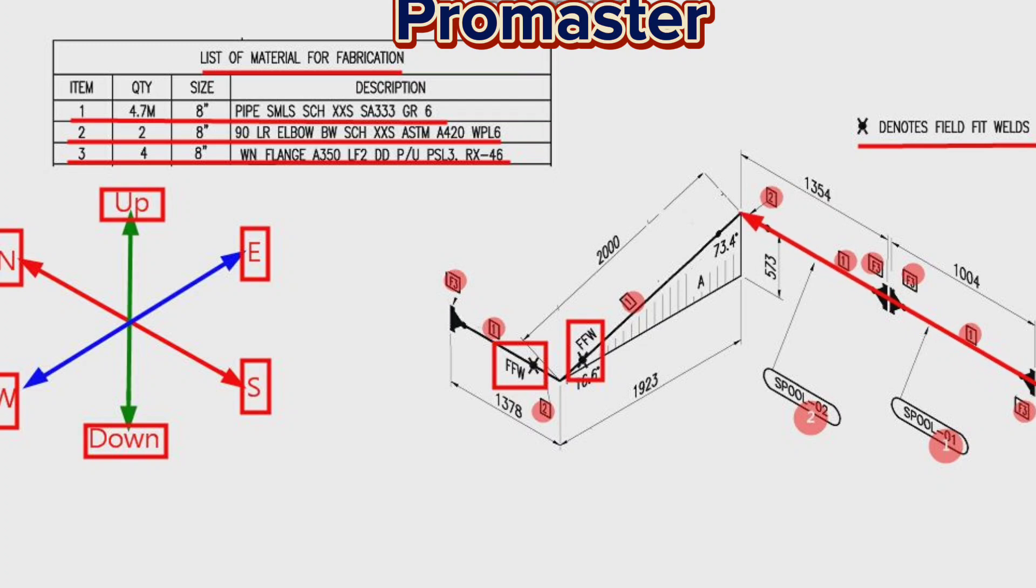Then the pipeline travels to the down direction 573 mm, then turns to the west direction 1973 mm. At this point, the pipeline travels to the north direction.